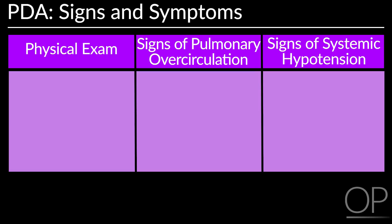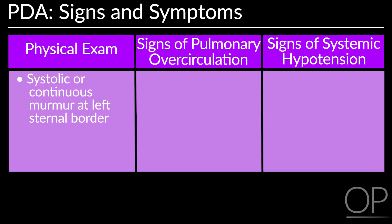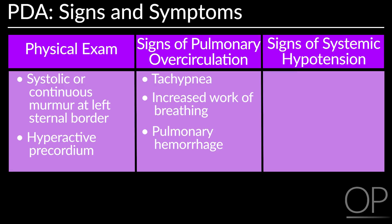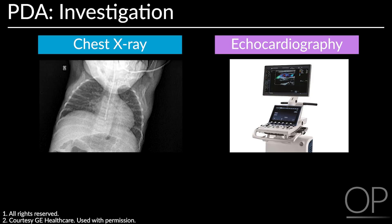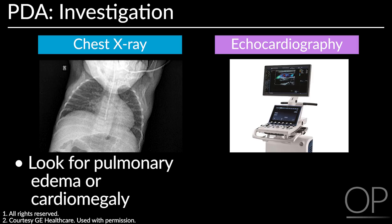Some signs and symptoms of PDA can be identified by physical exam. Flow through the ductus creates a systolic or continuous murmur at the left sternal border. Pulmonary over-circulation manifests as tachypnea, increased work of breathing, and pulmonary hemorrhage. Systemic hypotension with diastolic run-off through the ductus can be identified by wide pulse pressure, bounding pulses, and palmar pulses, often accompanied by a hyperactive precordium. To confirm a diagnosis of PDA, a chest x-ray or echocardiography can be obtained if available. Look for pulmonary edema or cardiomegaly on the chest x-ray.